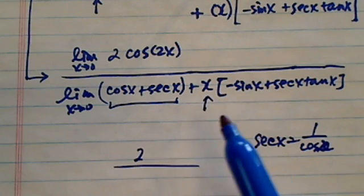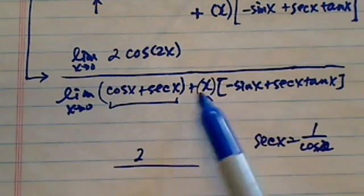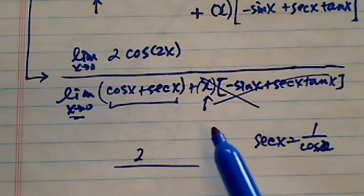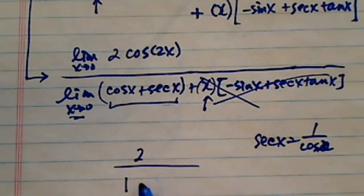However, this term becomes a 0, right, because x is approaching 0. So this term completely drops out. So all we have is the first term. The first term is really 1, actually 1 plus 1. So this limit becomes 2 over 2.